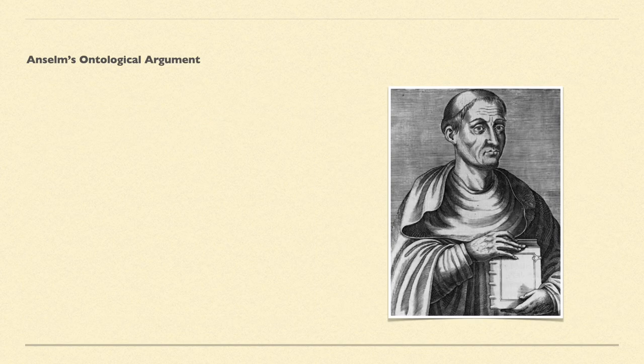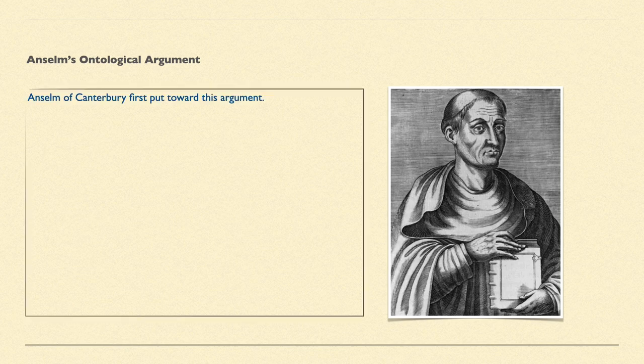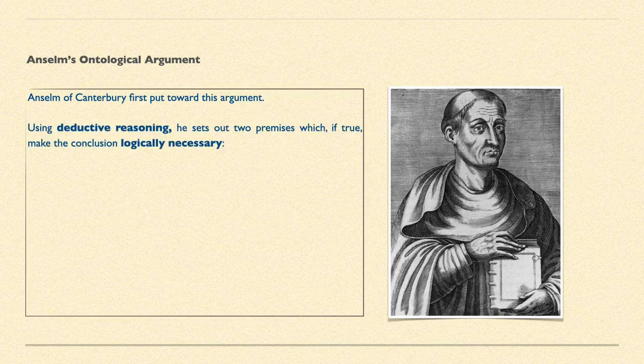So let's have a look at Anselm. Anselm's ontological argument — he was the first to put forward an ontological argument of this kind. He was the Archbishop of Canterbury in the UK. Using deductive reasoning, he sets out two premises which, if true, make the conclusion logically necessary. The conclusion must therefore follow to be logically and necessarily true.